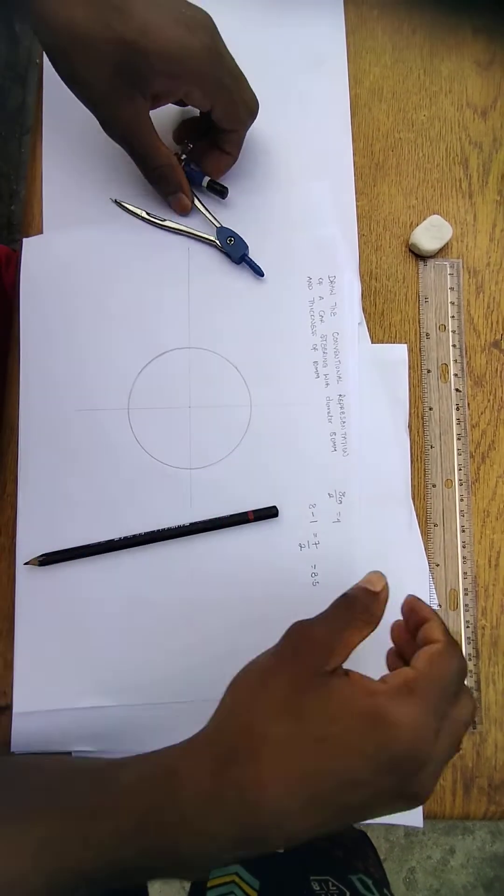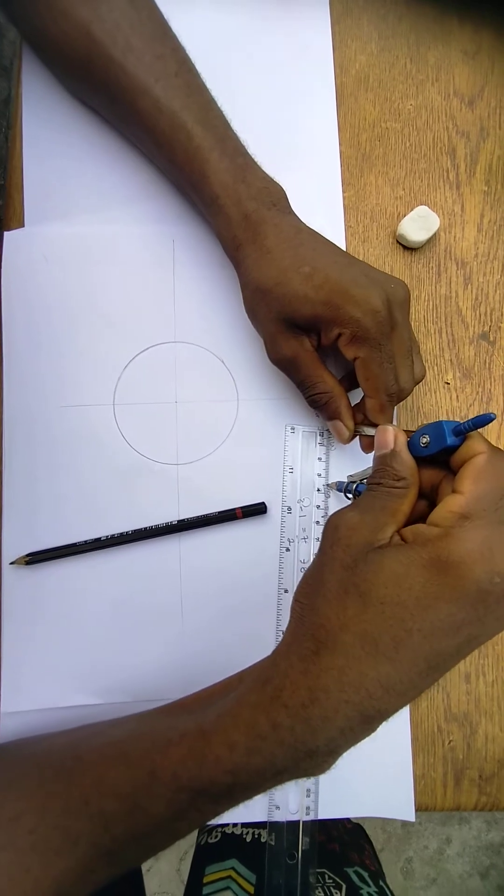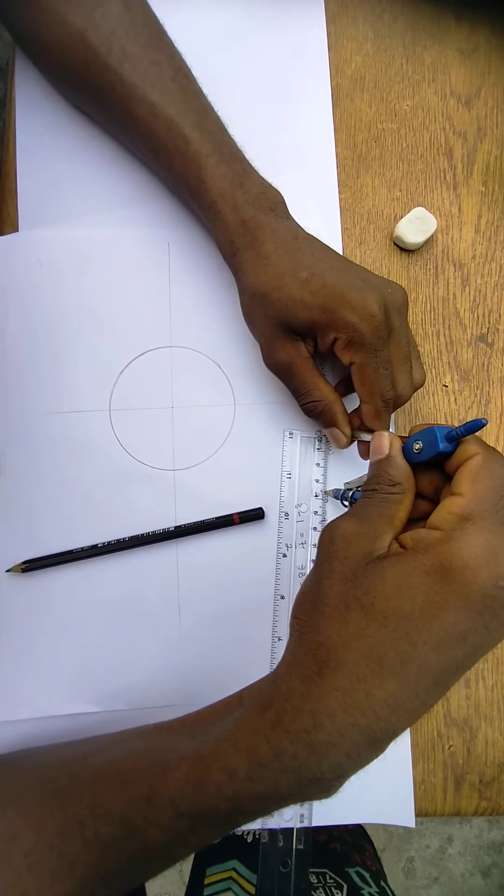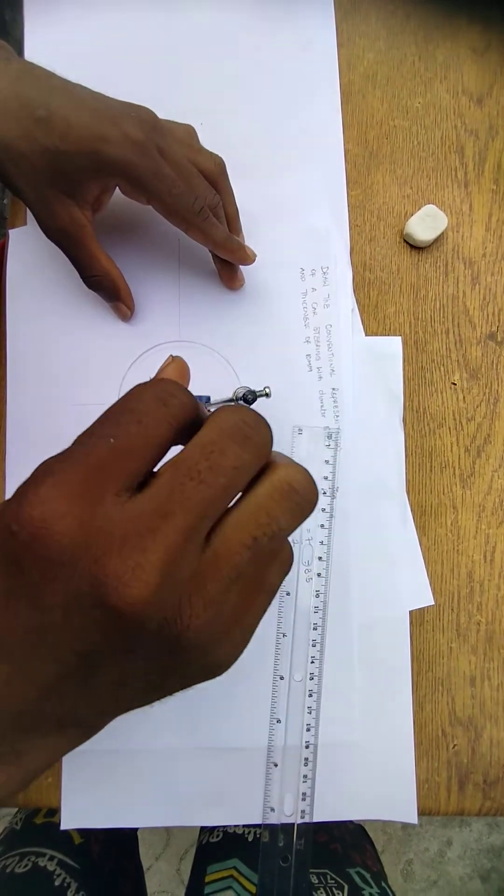This 3.5, you come again, you pick 3.5 from your ruler. 3.5. You now come here, now get the second circle.